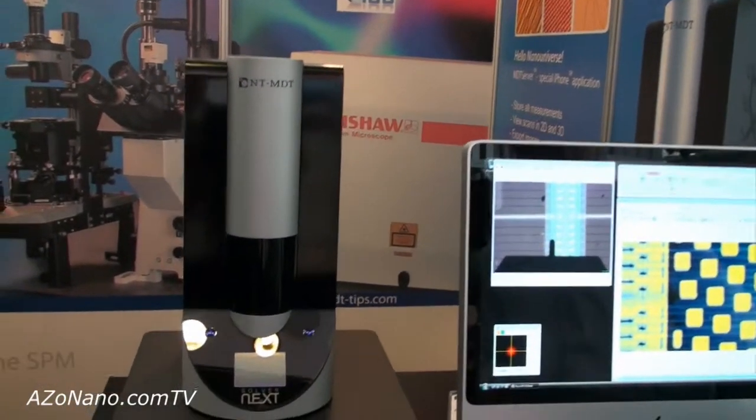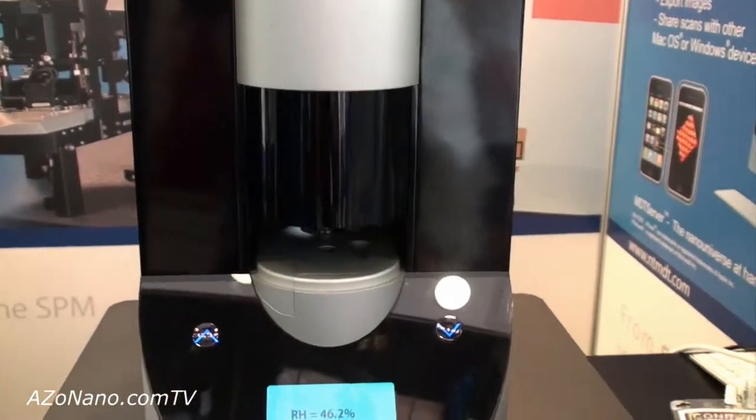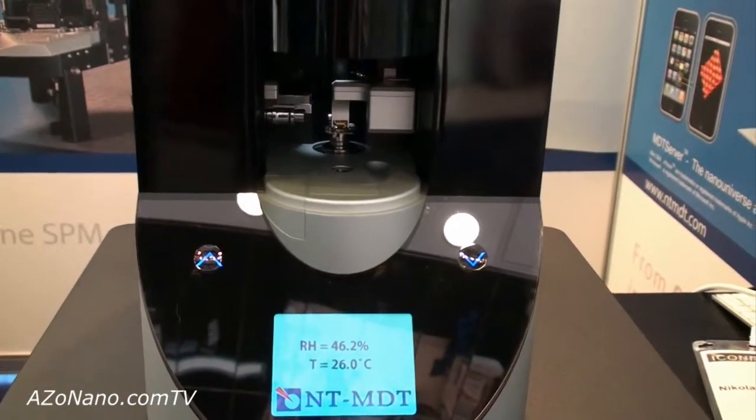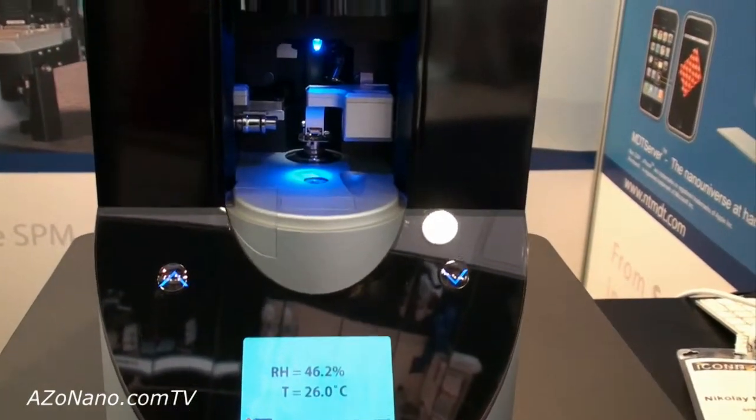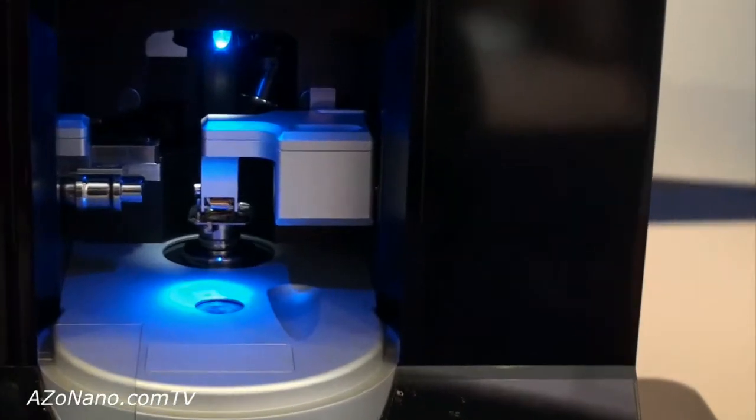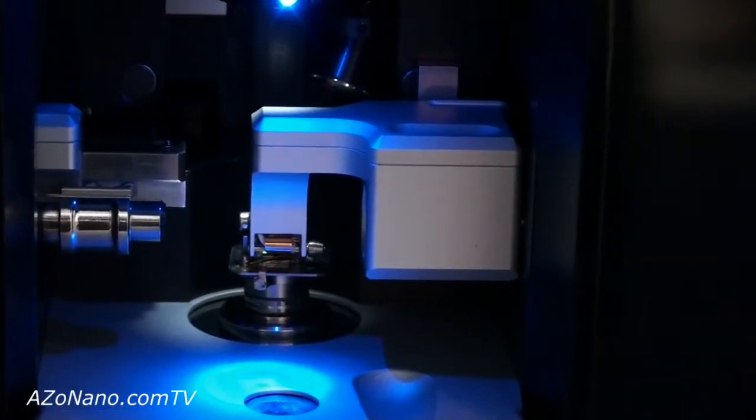First of all, I will open the motorized door which protects the sample from external noises and makes a homogeneous environment around the sample. It also protects your eyes from the laser source which is used in atomic force microscopy for cantilever deflection detection.